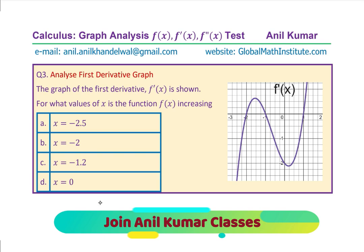Here is the third question: we are going to analyze the first derivative. The graph of the first derivative f'(x) is shown. For which of the values of x is the function f(x) increasing? It is a multiple choice question. The given points are x = −2.5, x = −2 at the intercept, x = −1.2, and x = 0. You need to identify at which of these points the function is increasing, given the graph of f'(x).